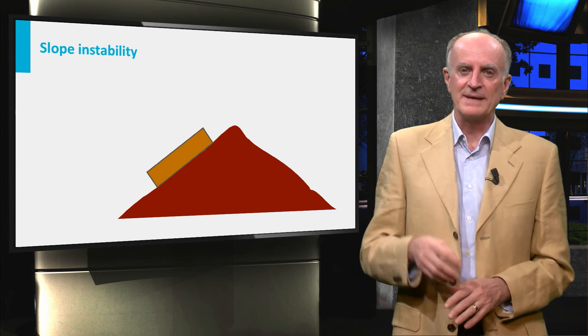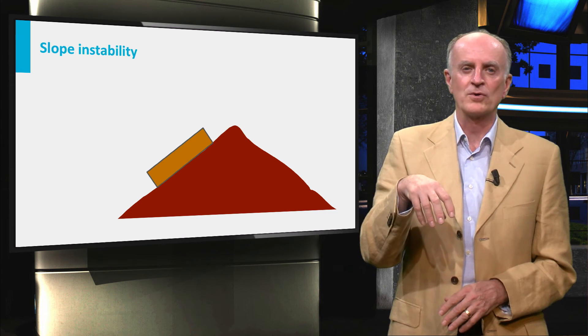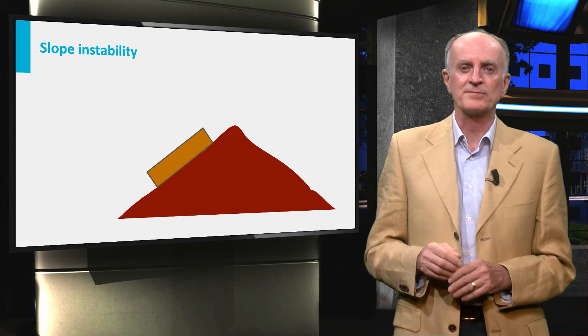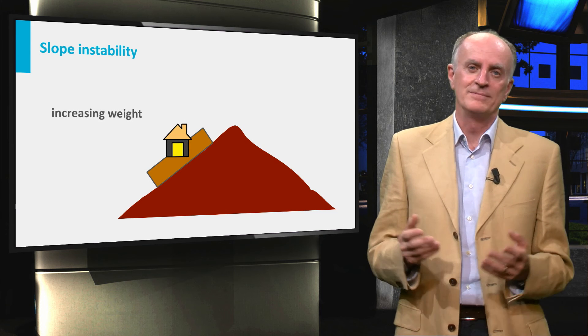Instability can be generated by increasing the weight of the block or on the block, for instance, by precipitation infiltrating the rock, or by people building a house.